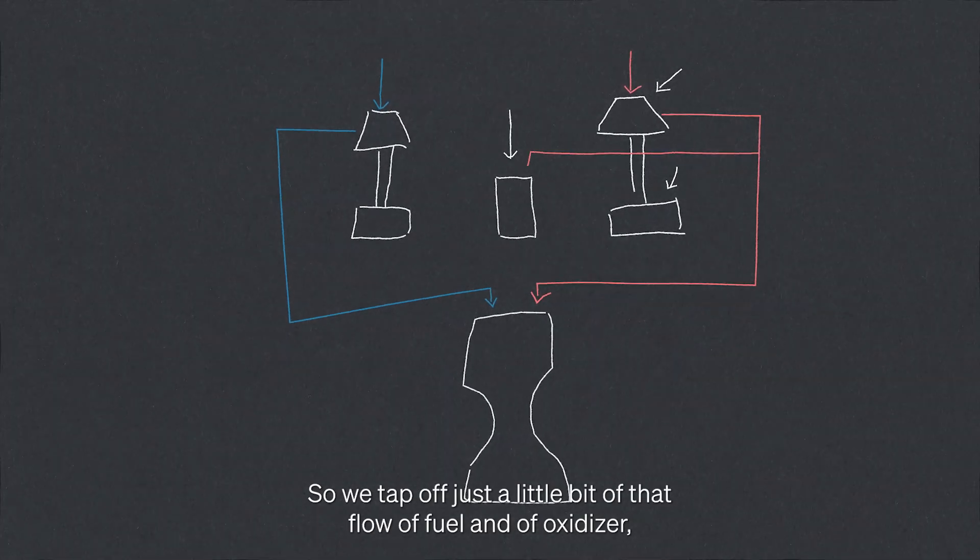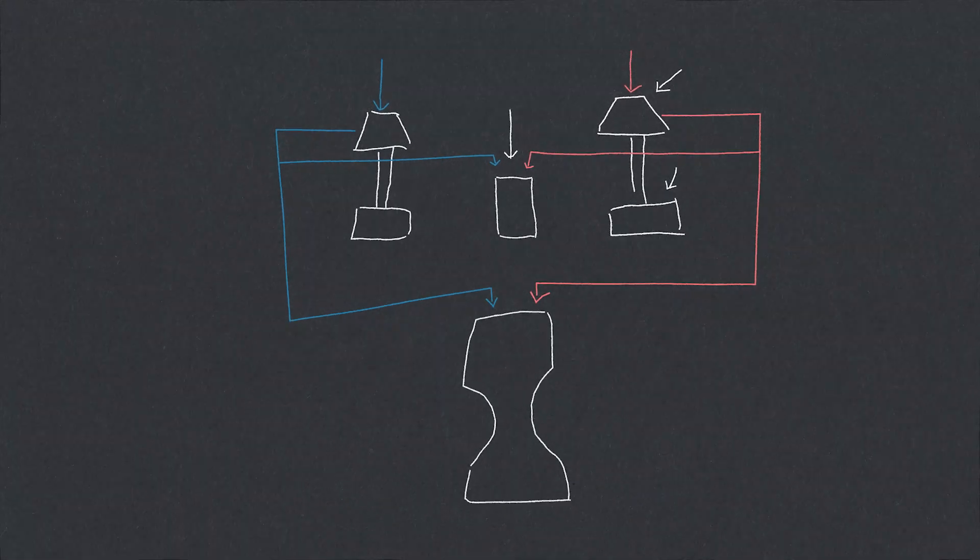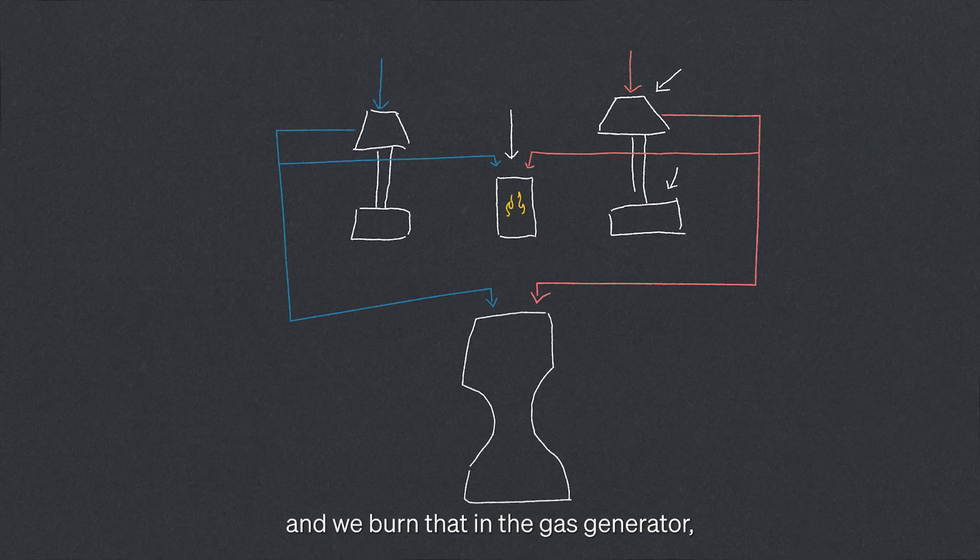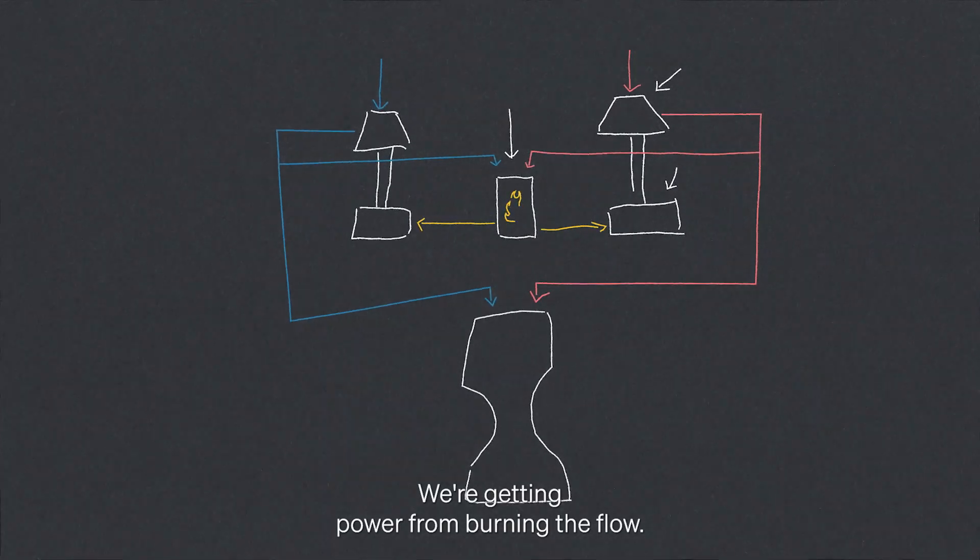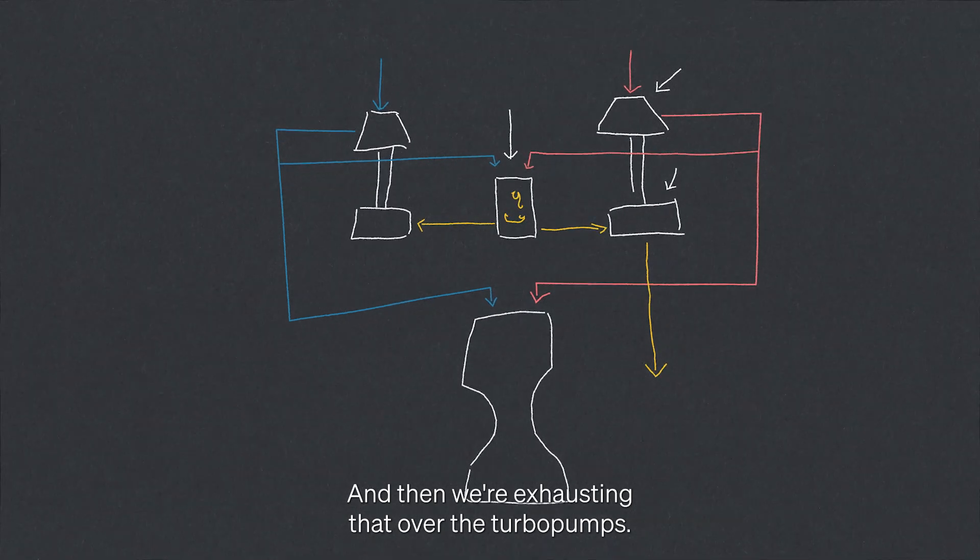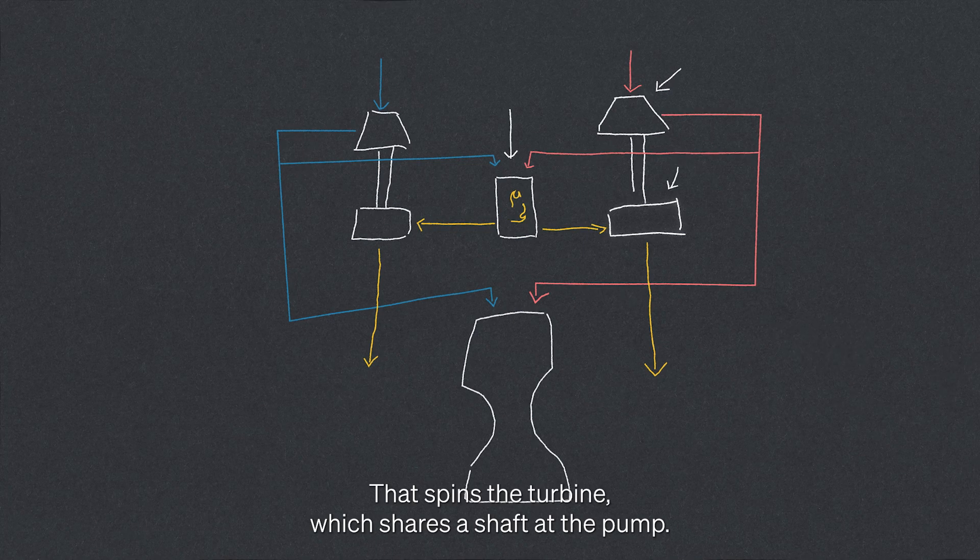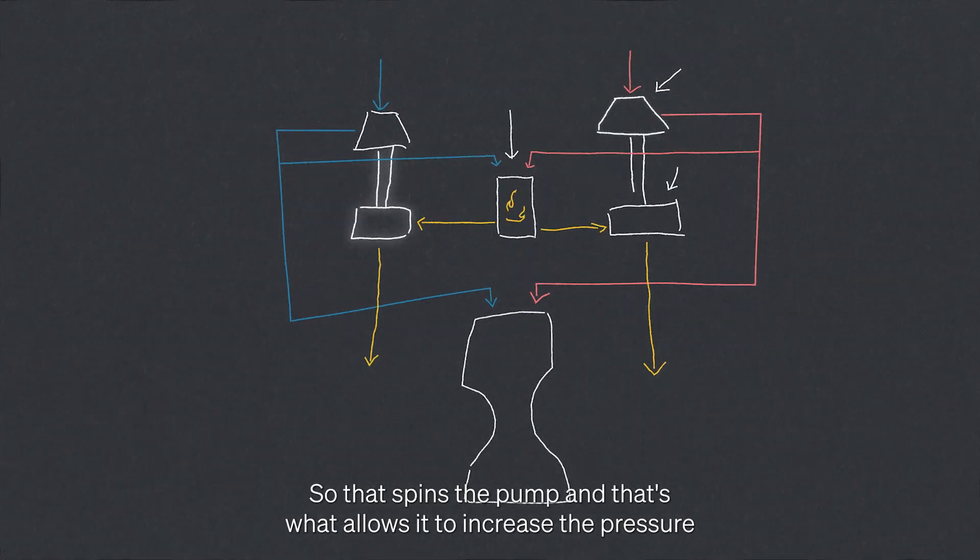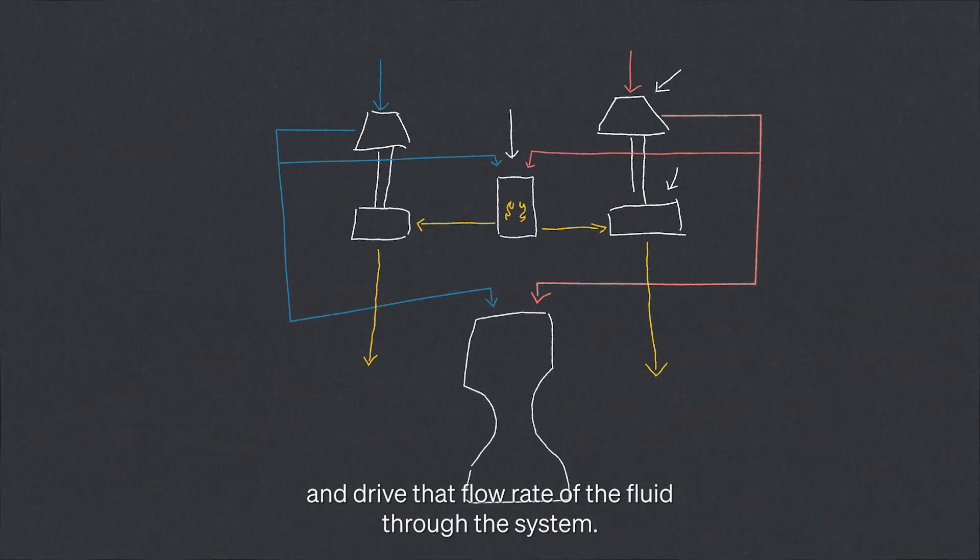We tap off just a little bit of that flow of fuel and oxidizer, and we burn that in the gas generator. We're getting power from burning the flow, and then we're exhausting that over the turbo pumps. That exhausts over the turbine in the turbo pumps, spins the turbine which shares a shaft with the pump. That spins the pump and that's what allows it to increase the pressure and drive that flow rate of the fluid through the system.